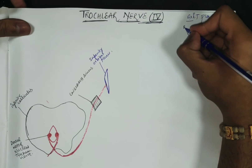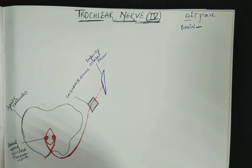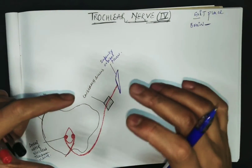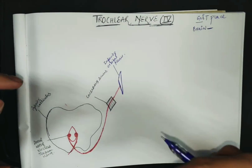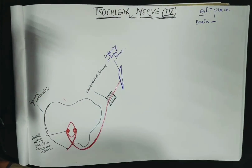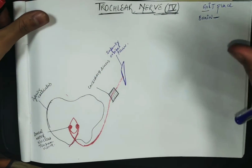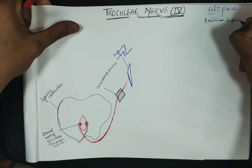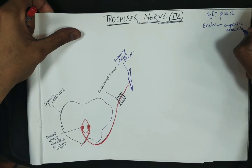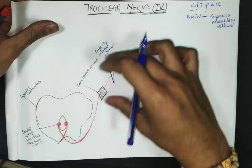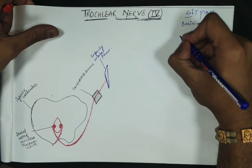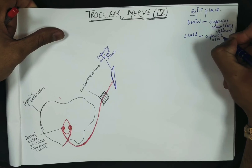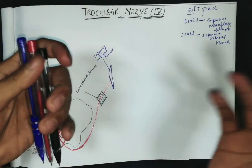There are two important exit points. First, the exit from the brain is through the superior medullary velum. This is a unique feature — the trochlear nerve is the only cranial nerve that exits from the dorsal side of the brain, whereas all other cranial nerves exit from the anterior side. Second, the exit from the skull is through the superior orbital fissure, the same as the oculomotor nerve.